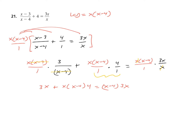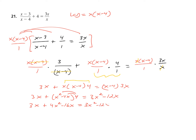Now we have that expression and we know we have to distribute — can't do anything with parentheses. So: 3X plus X squared minus 4X times 4 equals 3X squared minus 12X. We could have distributed both of these together, but let's not lose anyone. 3X plus 4X squared minus 16X equals 3X squared minus 12X.